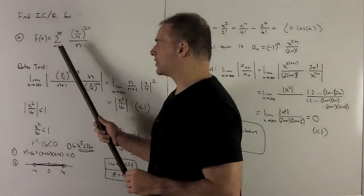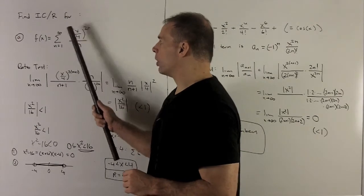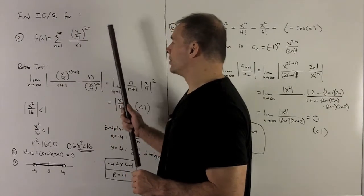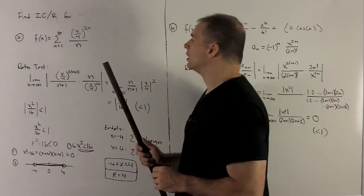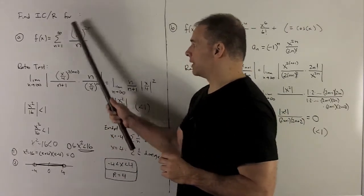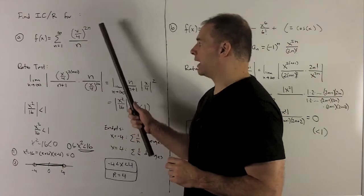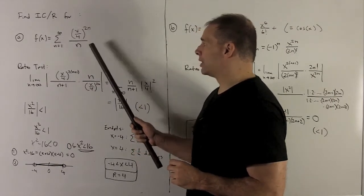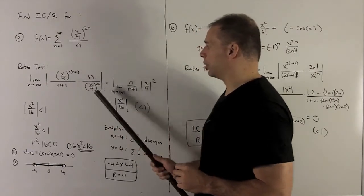We'll start with f of x equal to sum n going from 1 to infinity, x over 4 raised to the 2n over n. So I apply the ratio test, take the limit, we're going to take this term. Wherever I see an n, I put an n plus 1, and then we're going to take this term and flip it over.